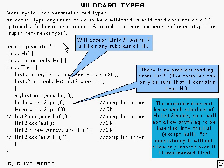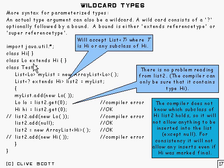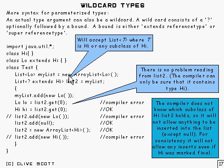What this does is it allows a wider range of things to be assigned to that type. We'll start with 'extends reference type'. Here we've got two little classes: High and Low, which extends High — High being higher up the tree near Object, and Low being lower down. Here's a List<Low> called MyList, and here is the first example of a wildcard type.